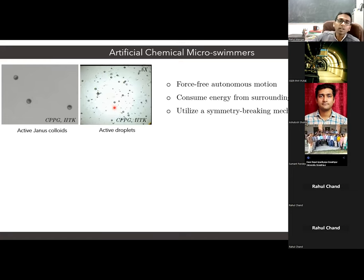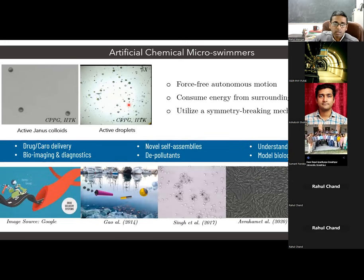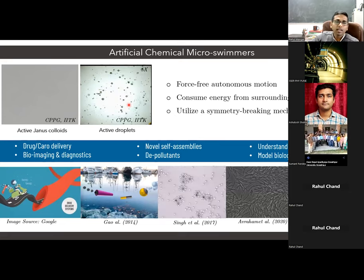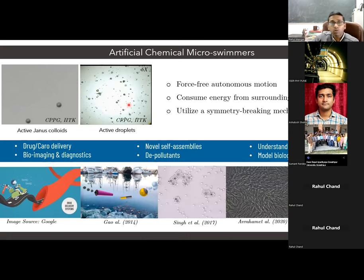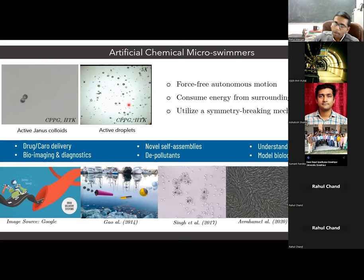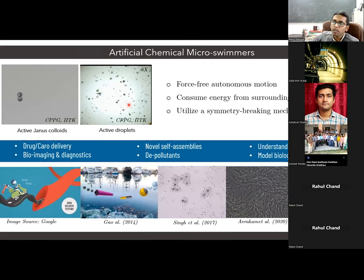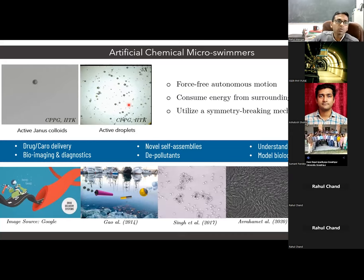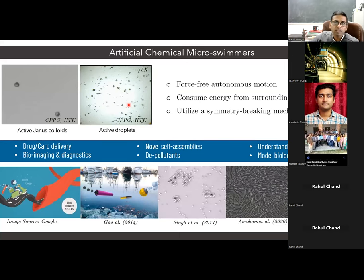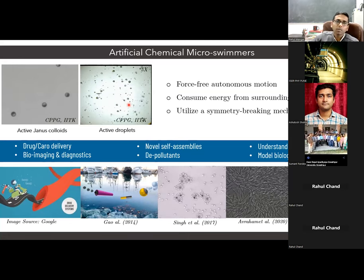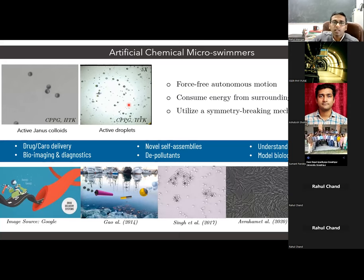Why do we want to study all this? The first motivation is to mimic the motion of biological micro-swimmers so that we can understand how they move in a variety of surroundings, how they perform self-assemblies and form colonies. Besides that, from an application point of view, they are very interesting systems because we can probably use them in drug deliveries or cargo deliveries in microscopic domains, as bio-imaging agents, and in biodiagnostics. Our group is actively interested in synthesizing these chemical micro-swimmers and understanding their motion in a variety of circumstances.